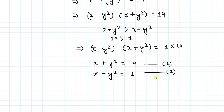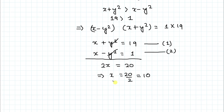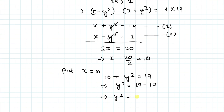In the next step, we add both equations. The y² and negative y² cancel out, giving 2x equals 20, so x equals 10. Substituting x equals 10 into equation 1: 10 plus y² equals 19, which gives y² equals 9, so y equals plus or minus 3.